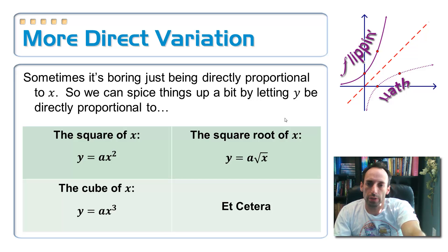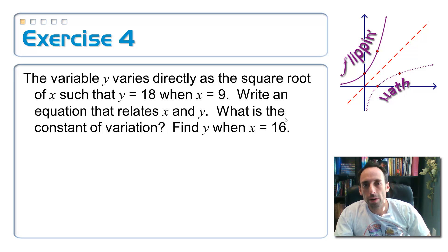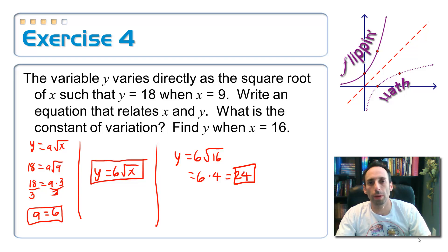So let me have you test out this with this question. The variable y varies directly as the square root of x, such that y is equal to 18 when x equals 9. Write yourself an equation that relates x and y. What's the constant of variation, of course? And then find y when x equals 16. This one, I'm going to let you tackle all by yourself. Pause the video. So is this what you got? So we're going to use the equation of the form y equals a square root of x. You have to find your constant of variation by plugging in 9 for x, 18 for y. You get a constant of variation of 6. So write your equation as y equals 6 times the square root of x. And then finally, the last part of the question, plug 16 in for x. Take the square root of that. That's 4 times it by 6, so you get 24.